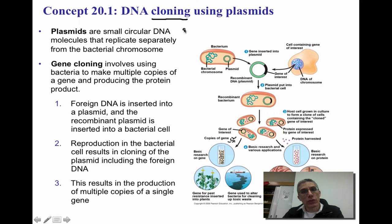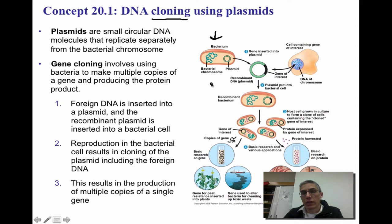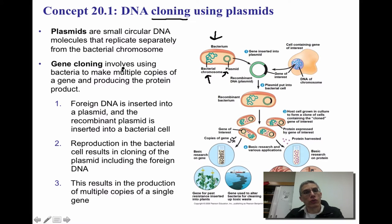We've discovered that we can actually use bacteria to clone DNA. Bacteria are really important in this area of science. Bacteria are prokaryotic cells, so they're extremely simple in structure. But if you look at the genetic material of a bacterium, they actually have two sets: one called the bacterial chromosome, which is a single strand of circular DNA, and a much smaller area called the plasmid. Gene cloning involves using the bacteria itself to make multiple copies of a gene and produce the protein product that we're interested in.